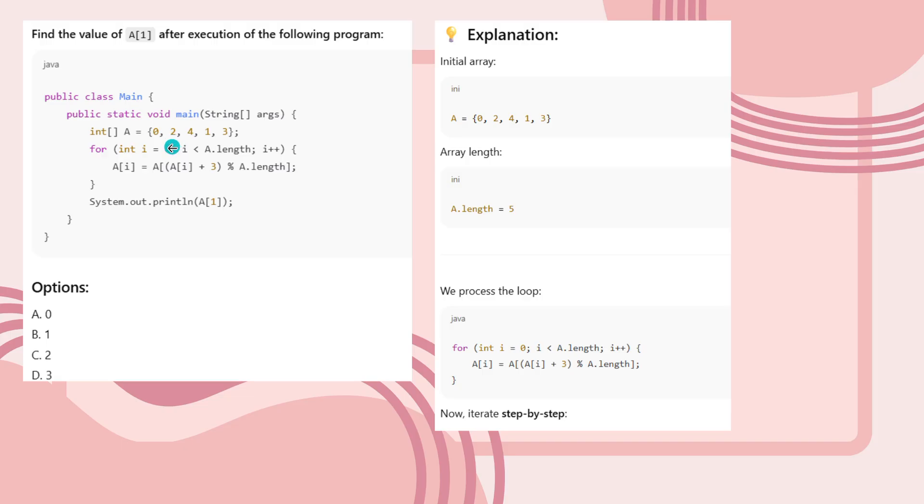Now 2 here, 2 plus 3—how much? 5. 2 plus 3 is 5. 5 modulo divided by a.length. A.length is 5. 5 modulo divided by 5—how much? You have to consider modulo division, which means you have to consider the remainder. Zero.